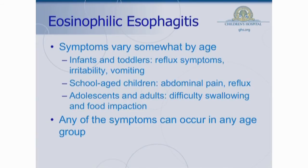They also tend to have ongoing reflux symptoms and vomiting. As you get into adolescence and then into adulthood, the complaints you hear more often are things like difficulty swallowing — something we call dysphagia — the feeling that something is getting stuck on the way down, or actually sometimes people do have something physically get stuck, called a food impaction, where it doesn't go down and sometimes even needs to be removed endoscopically. Any of these symptoms can occur in any of the age groups, but generally, as people get older, the symptoms that they complain of do change a little bit.